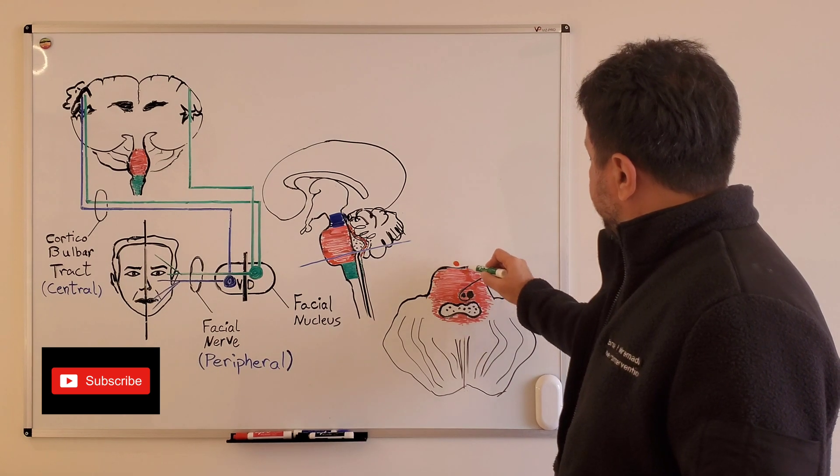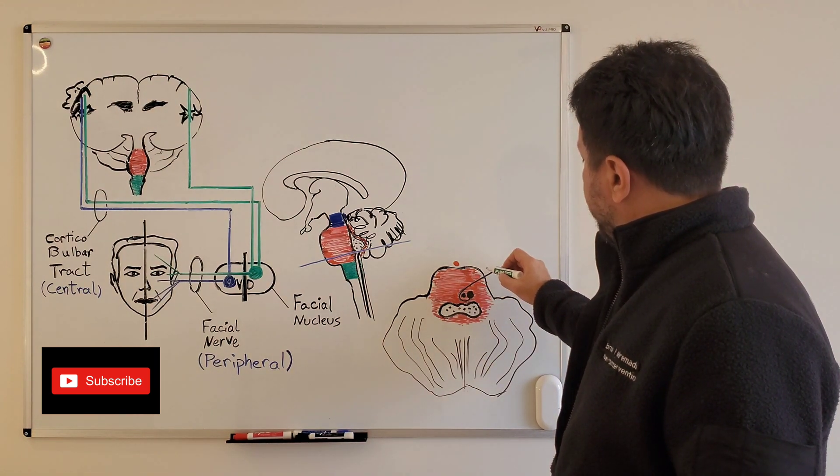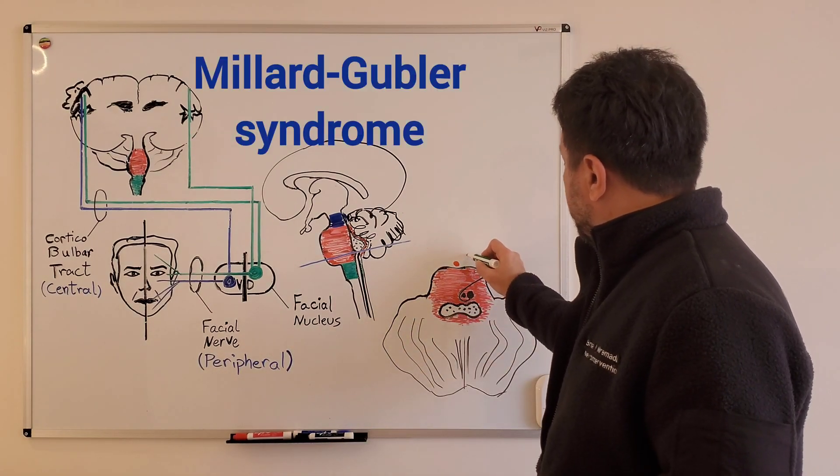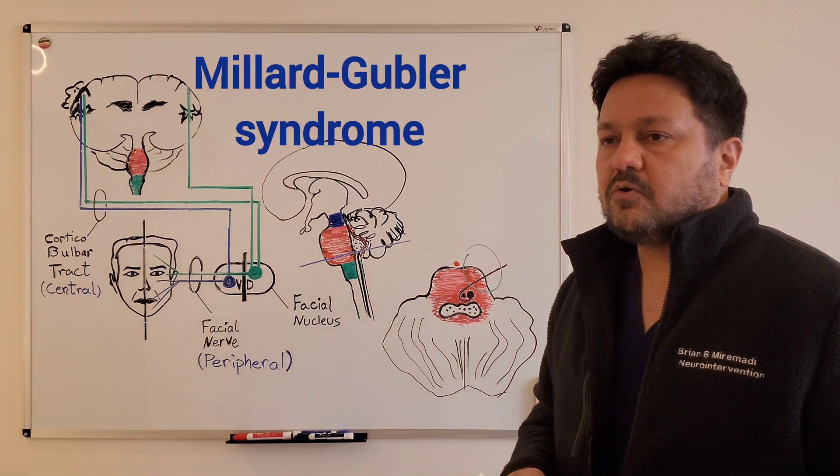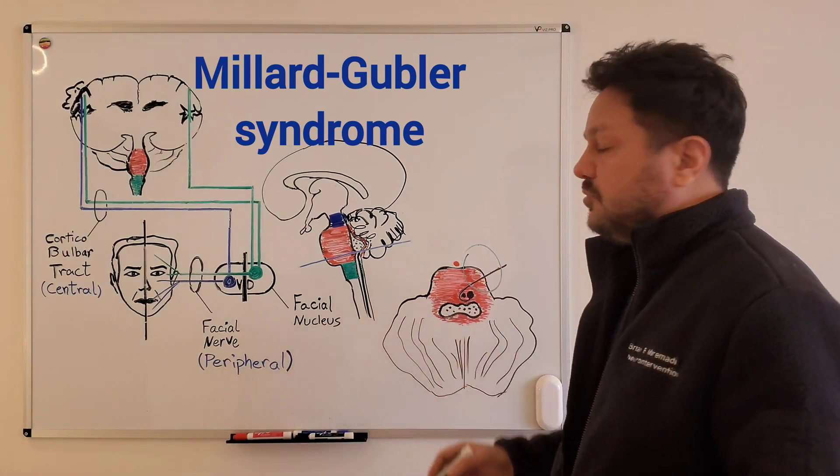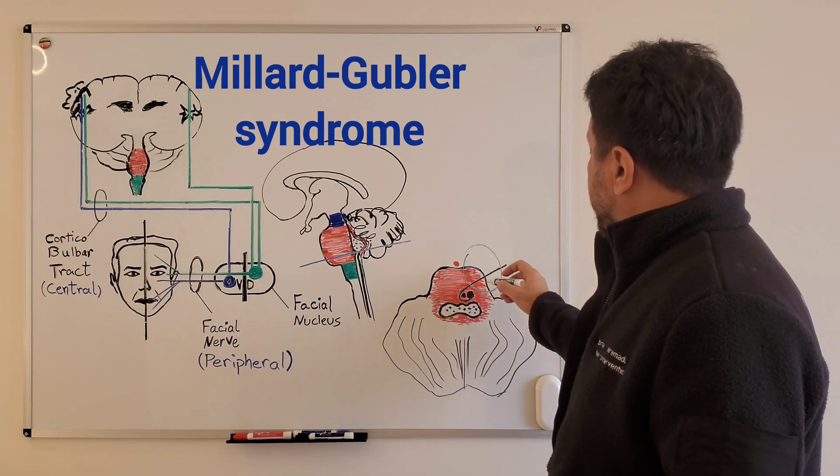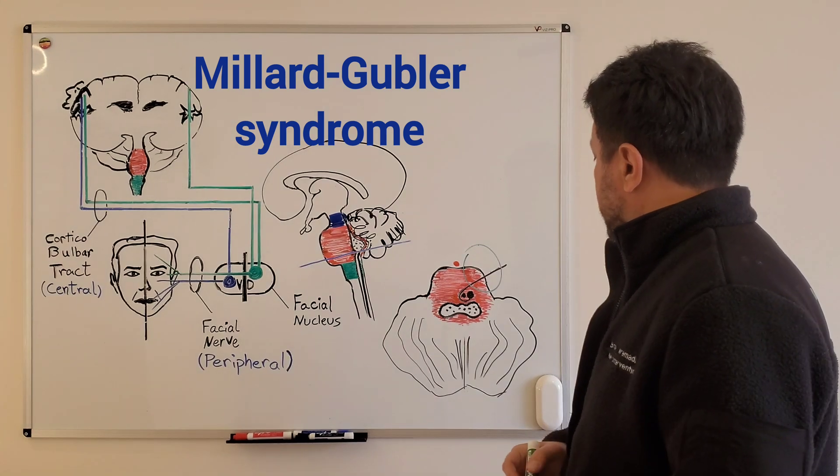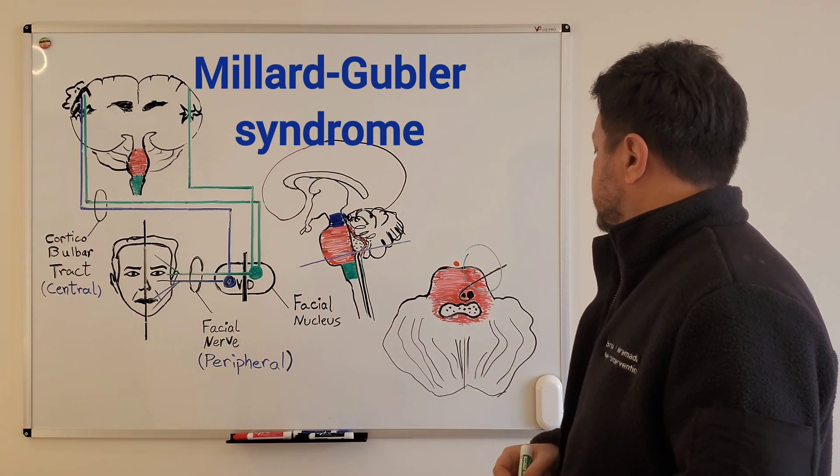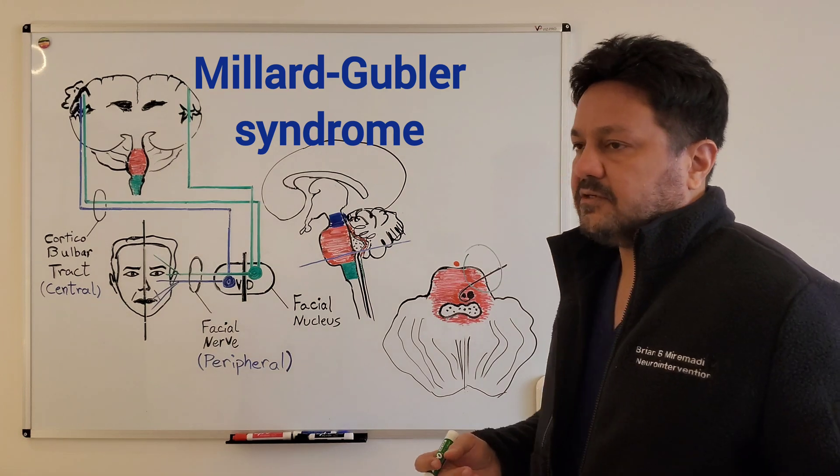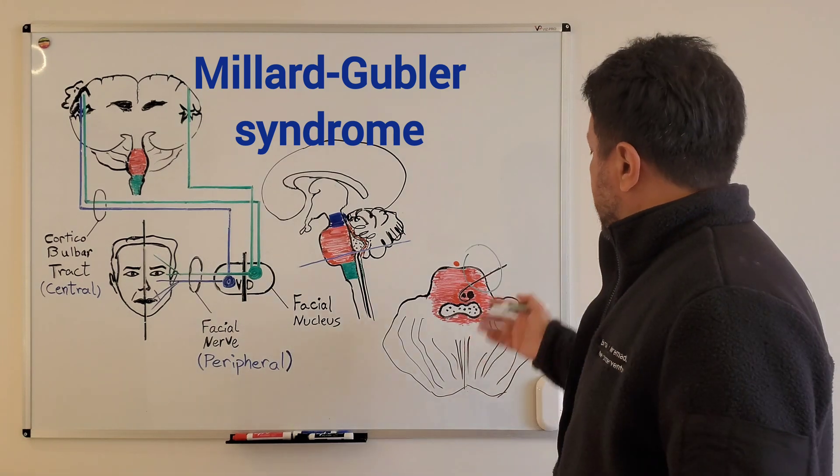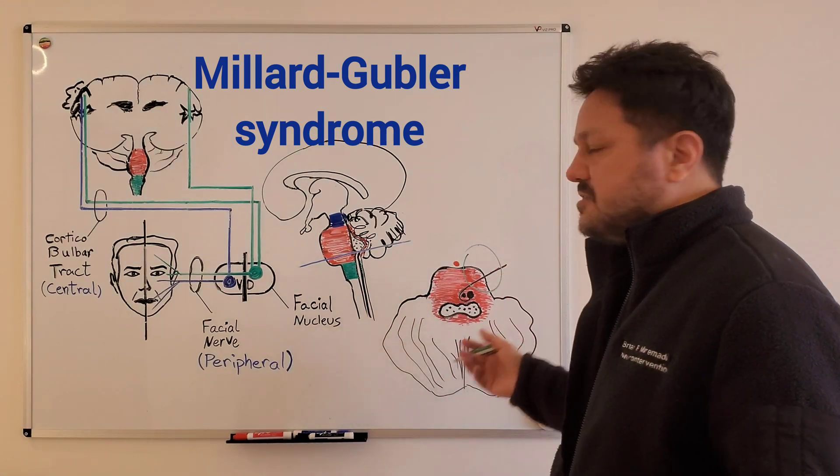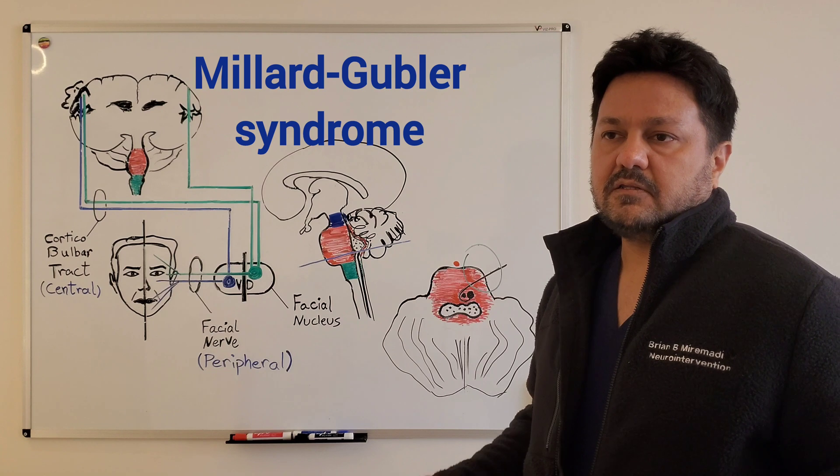But if a stroke, for example, affects the basis pontis, the front of the pons, those fibers in the corticospinal tract which passed through right there will be affected. And then sometimes you're going to also have involvement of the facial motor fibers, and your patient presents with combination of contralateral arm and leg weakness and ipsilateral upper and lower face weakness in a syndrome called Millard-Gubler syndrome.